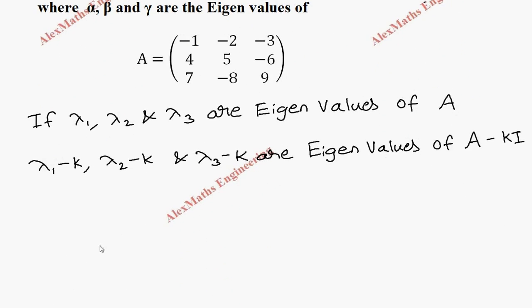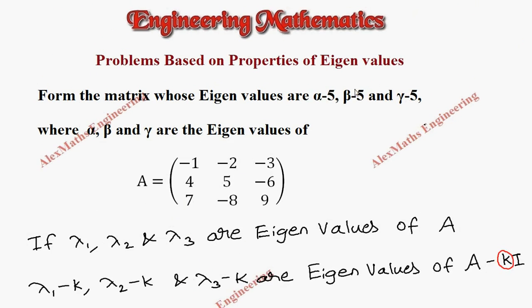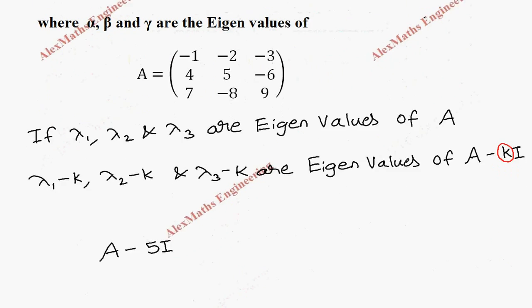What we have to find is A minus 5I. The value k is nothing but the value of the constant which is subtracted from each eigenvalue. So we are going to find A minus 5I.